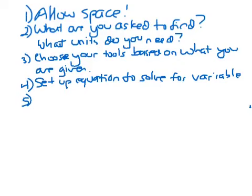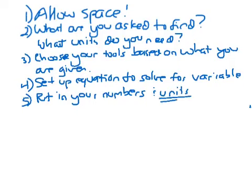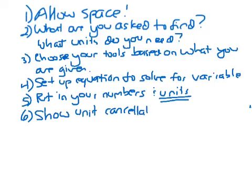The next one is put in your numbers and units. Don't forget the units. It's all about the units. That's very, very critical. Do calculations and show unit cancellations. And if there are no unit cancellations, then there are no unit cancellations. You don't always have unit cancellations.